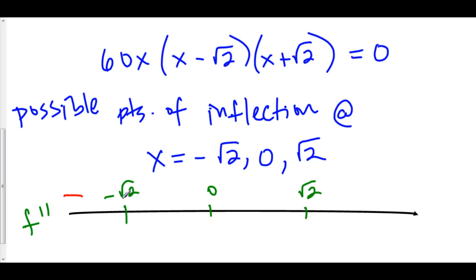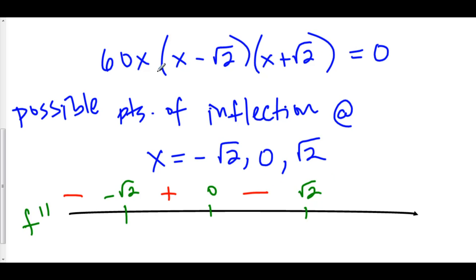Between -√2 and 0, let's try -0.1. That gives negative times negative times positive, which is positive. Now let's check 0.1, between 0 and √2: positive times negative times positive — that's negative. And to the right of √2, let's try 10: positive times positive times positive — that's positive.